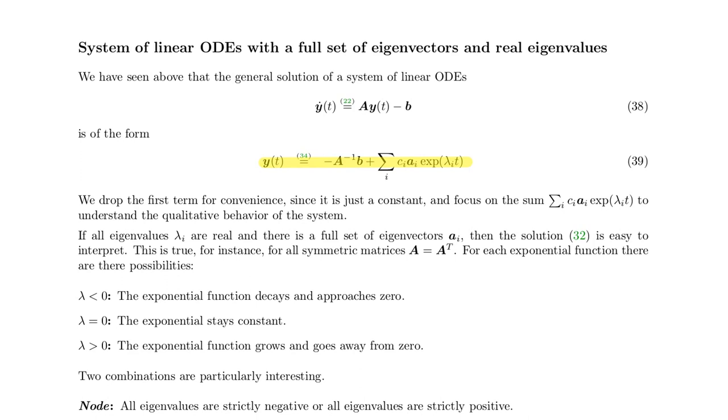The first term, minus A inverse times b, is just a constant, so we will ignore it and just focus on the sum on the right side. Remember, ci are arbitrary pre-factors. Because of the superposition principle, you can combine the solutions arbitrarily. The ai are the eigenvectors of matrix A and lambda i are the eigenvalues of matrix A.